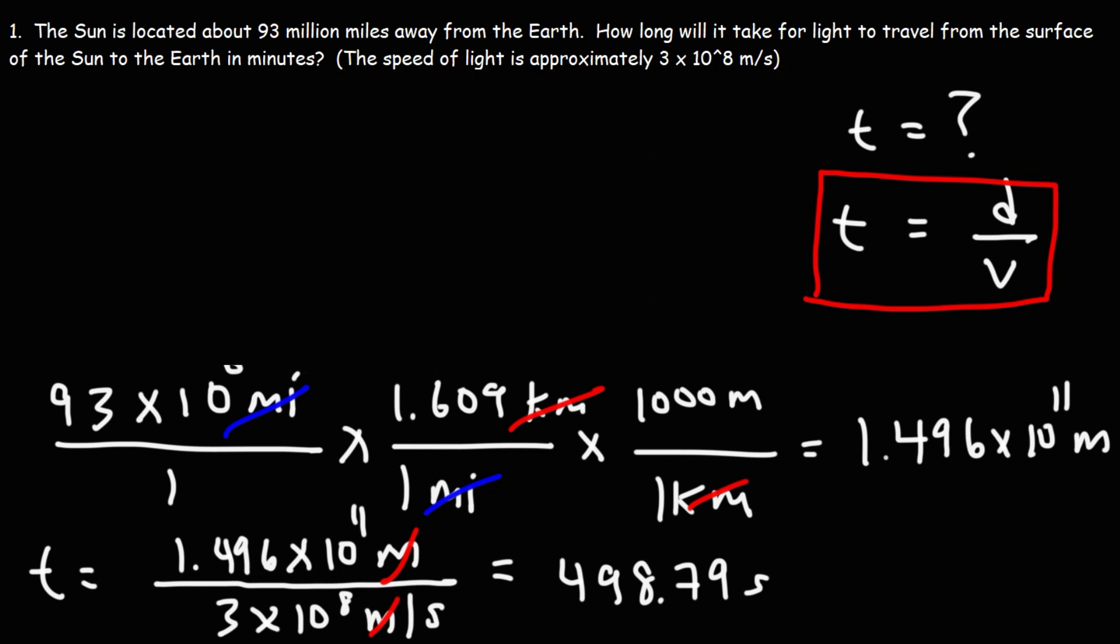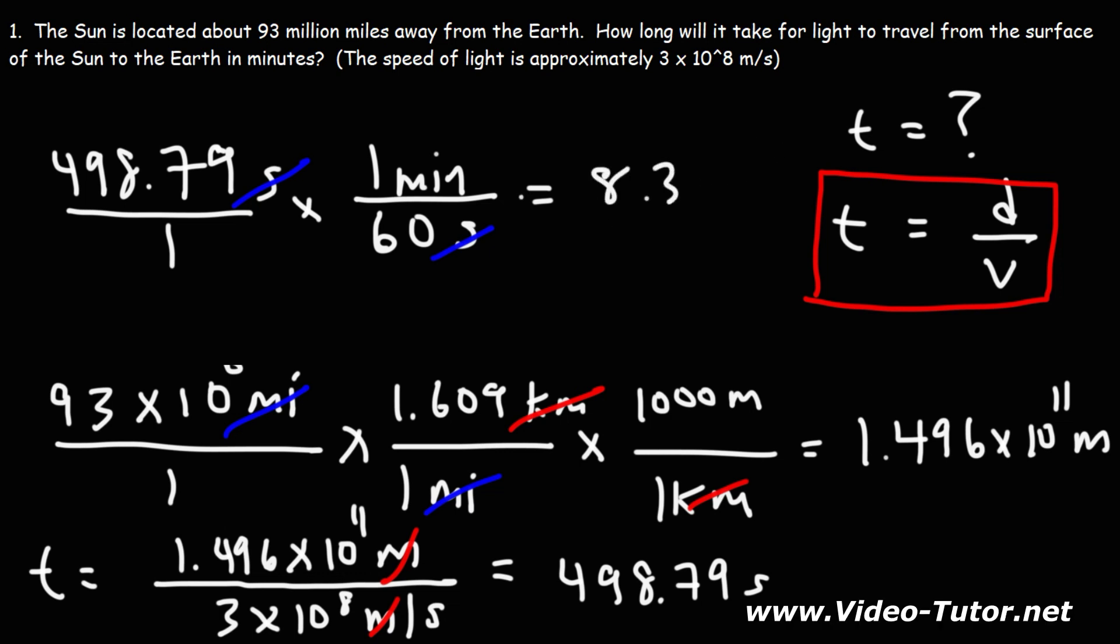Now the last thing we need to do is convert seconds to minutes. One minute equals 60 seconds, so we just divide this result by 60. 498.79 divided by 60 is 8.3 if you round it. So we can say this is approximately 8.3 minutes. So that's how long it takes for light to travel from the surface of the Sun to the Earth.